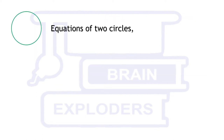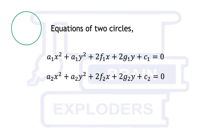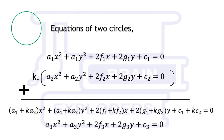Now let us see what kind of curve is obtained when both the given curves are circles. For this, let us take two general equations of circles and add the first equation to k times the other equation. We find that the obtained equation is also an equation of a circle.